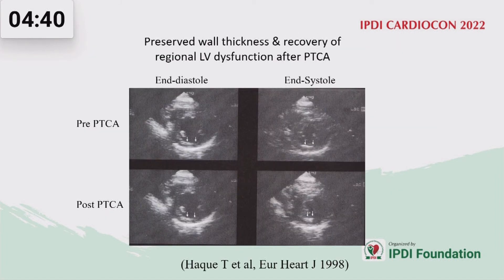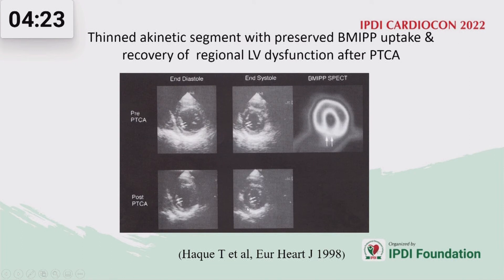An example shows that before angioplasty, the inferolateral wall had preserved end-diastolic thickness but was akinetic; after revascularization, systolic thickening improved. Another example shows a thin akinetic inferior segment with preserved BMIPP uptake on SPECT imaging, and this segment also showed improved systolic thickening after revascularization, with global ejection fraction also improving.